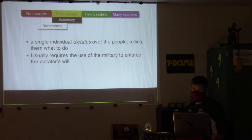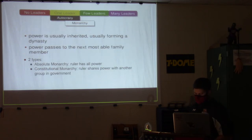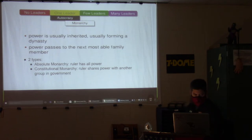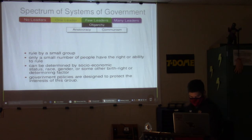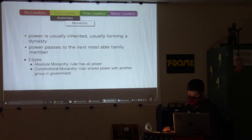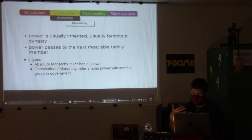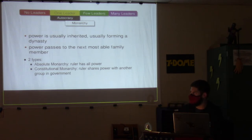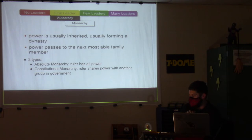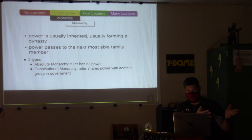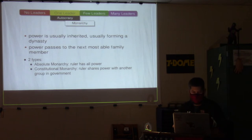In some cases people overthrow the dictator — that happened as recently as 2012 in Egypt. Then we have monarchy — being a king or queen. Power is usually inherited in the form of a dynasty. The heir gets the power. Two types: absolute monarchy, where the ruler has all the power — no legislative or judicial branch — and constitutional monarchy, where the ruler shares power with another group in government.